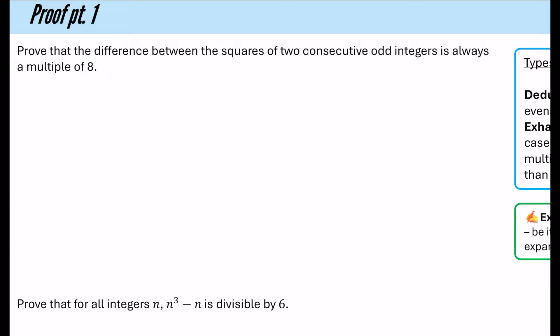This is an example of a proof by deduction. It says: prove that the difference between the squares of two consecutive odd integers is always a multiple of eight. We've got some odd integers, and there's the word consecutive — consecutive just means next to each other. So if I had an odd integer 11, a consecutive one is either going to be 13 or 9. I'm going to say that my first odd integer would be 2k plus 1, and my next odd integer as 2k plus 3, or the one before it as 2k minus 1. Either of these are going to work and always produce the same kind of answer.